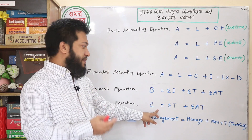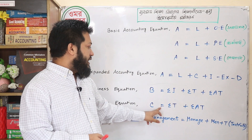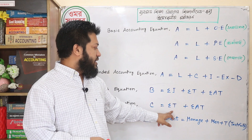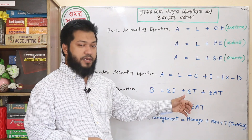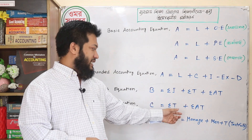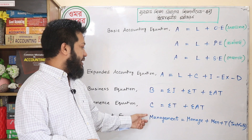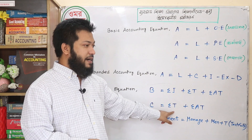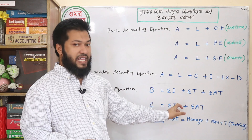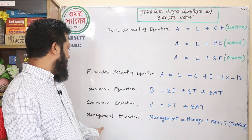That means C equal to summation T plus summation AT. C means commerce, T means trade, and AT means auxiliary to trade.